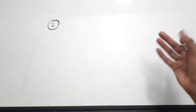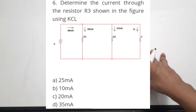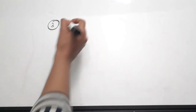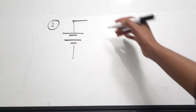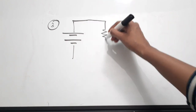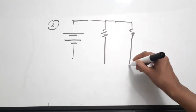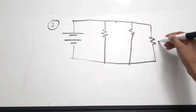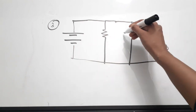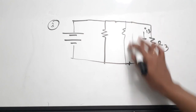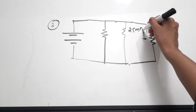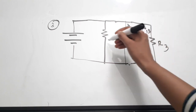Question three: determine the current through resistor R3. R3 has been cut off from the circuit, and we need to find current I3. The circuit has a voltage source; the current produced by the source is directly given at 60 milliamperes. There is resistance R2 with 25 milliamperes flowing through it, and resistance R1 with 10 milliamperes flowing through it.